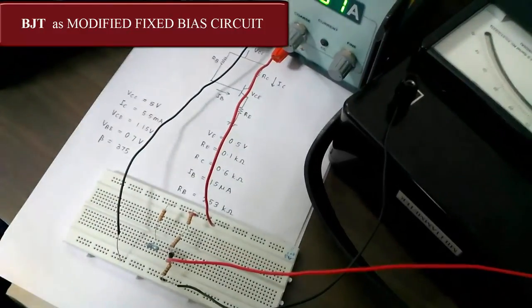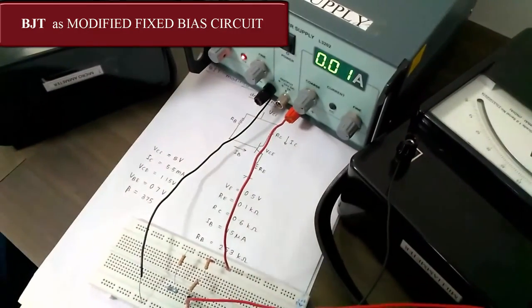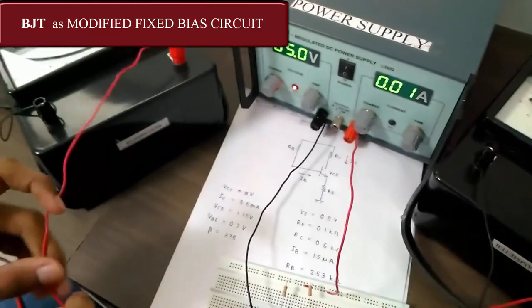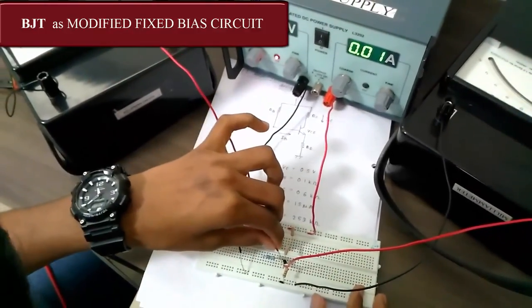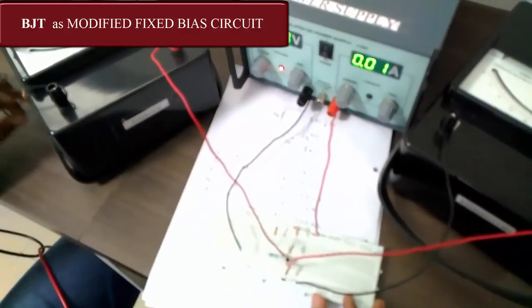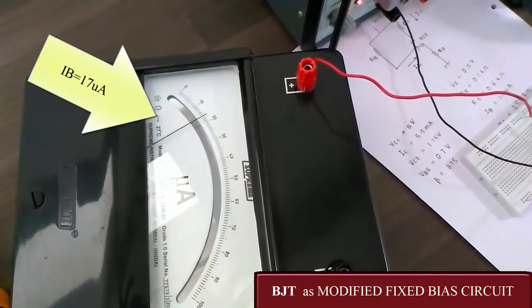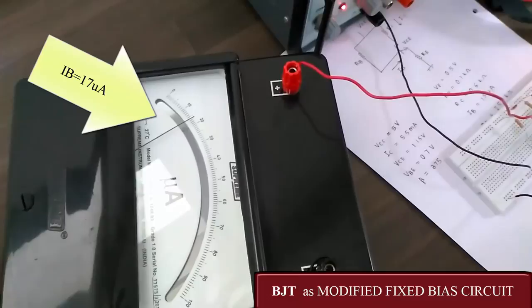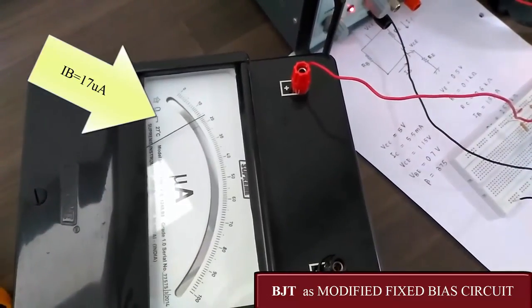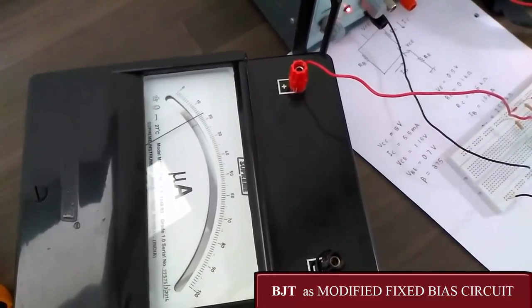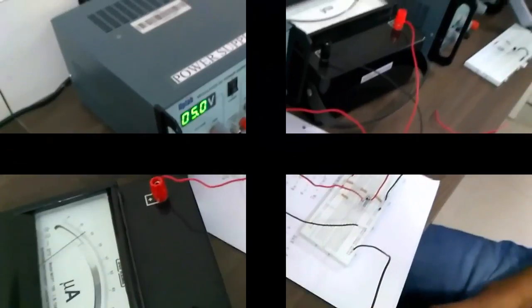Now, let us check the value of IB. The value of IB that we should get is 15 microamp. We connect the microammeter, the positive of the microammeter to the base and the negative to ground. Here we can see that the value that we should get for IB is 15 microamp and we get the value of 17 microamp. That is even very close to 15 microamp. So, we can say that the designing of modified fixed bias is successful. Thank you.